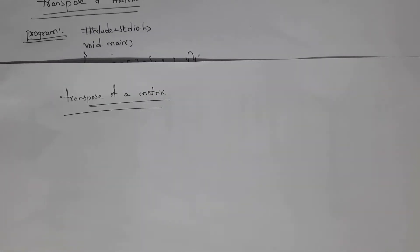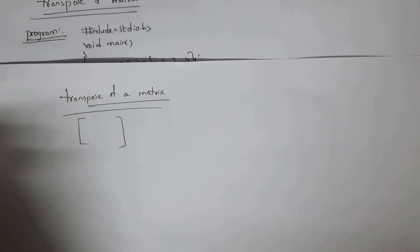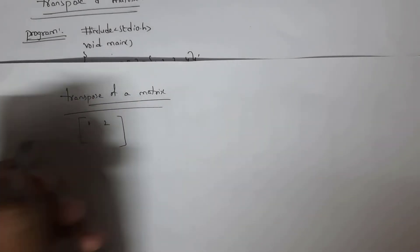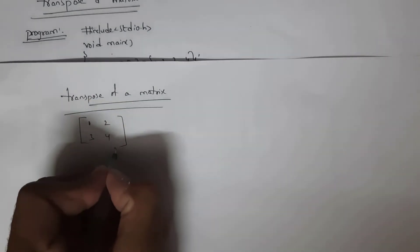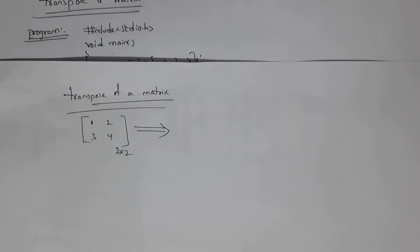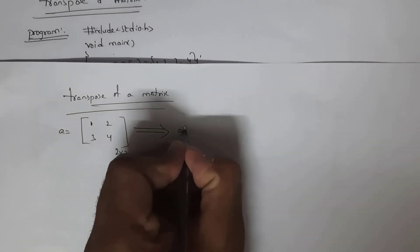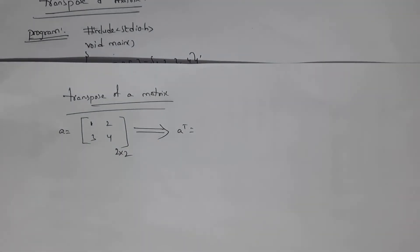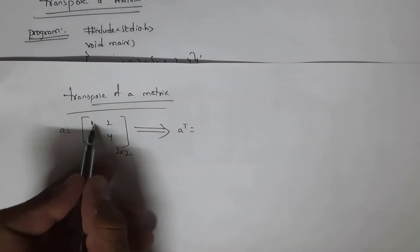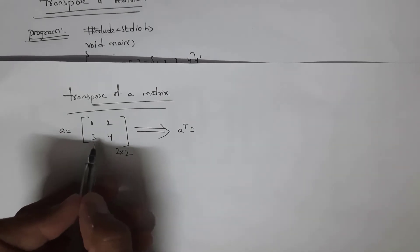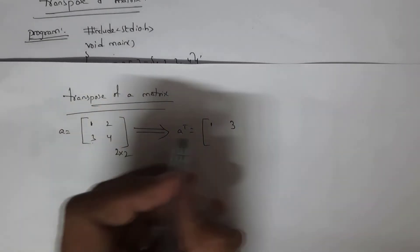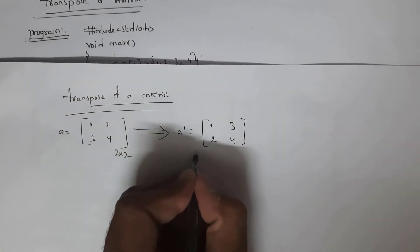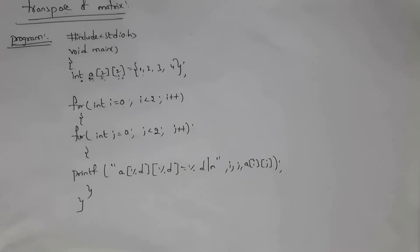Next I will explain the program for transpose of a matrix. Before that you need to know what transpose of a matrix is. For example, this is a 2x2 matrix containing elements 1, 2, 3, 4 with two rows and two columns. Transpose means we need to represent columns as rows. The first column contains 1 and 3, so we write 1, 3 as the first row. Similarly the second column becomes the second row: 2, 4.